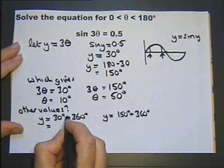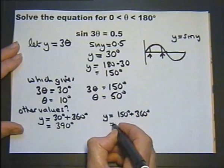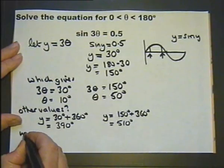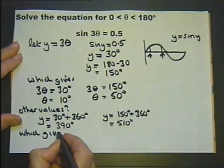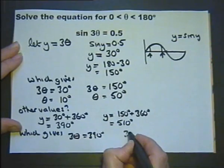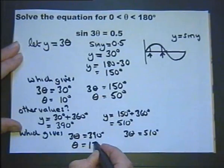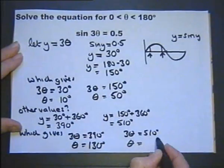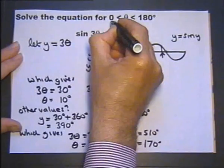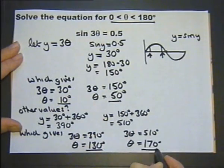So it gives us another two possible values for y. Therefore this will give 3 theta equals 390 and 3 theta equals 510. So theta itself can equal 130 degrees and theta itself could equal 510 divided by 3, which is 170 degrees. In other words, within this range we have got four answers.